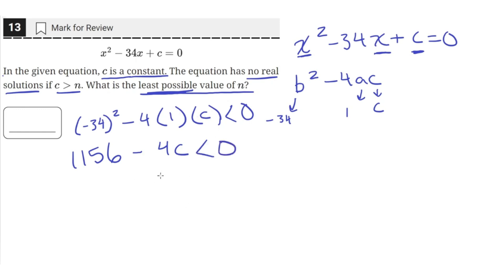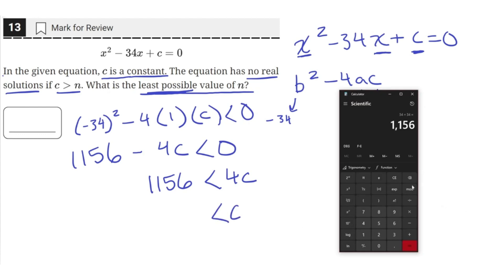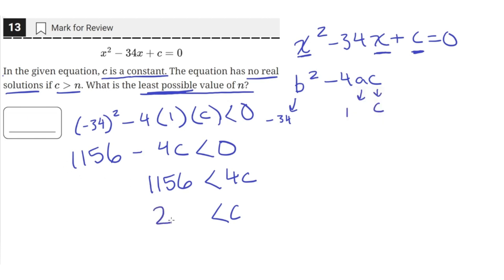So now let's isolate for c. Let's move the 4c to the other side. So we'll have 1,156 on this side and 4c on this side. Then let's divide both sides by 4 to get c alone. So 1,156 divided by 4 is equal to 289.